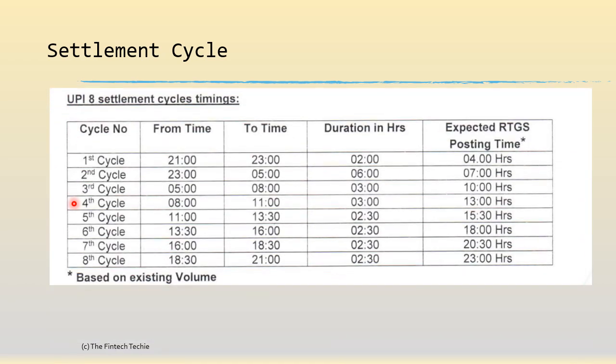Regarding the settlement cycle — how many times a day? This is a screen from a circular issued by NPCI wherein in 2021 they said there will be eight settlement cycles, and you can see the from and to times for each cycle.